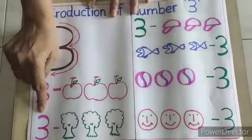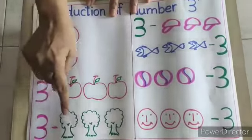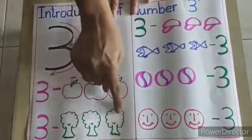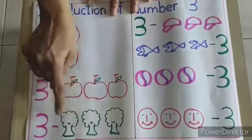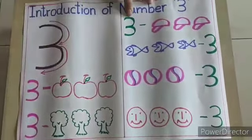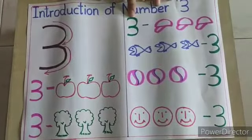So once again children, number 3. 1, 2, 3. 3 trees in front of number 3. Once again children, number 3.